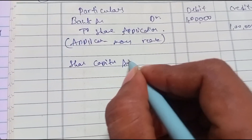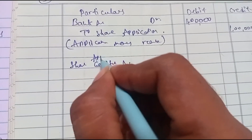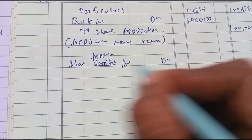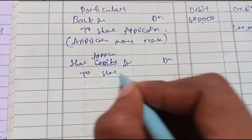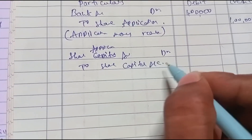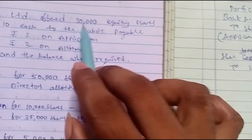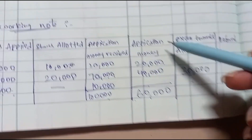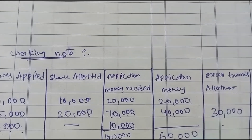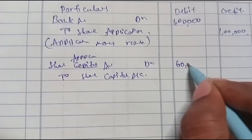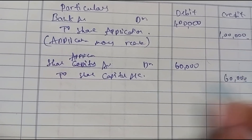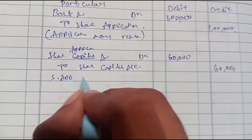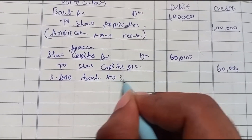Second entry: Share Application Account debit to Share Capital Account. We have only 30,000 shares issued at 2 rupees each, so the amount transferred to Share Capital is 60,000 rupees — that is 20,000 plus 40,000 equals 60,000.